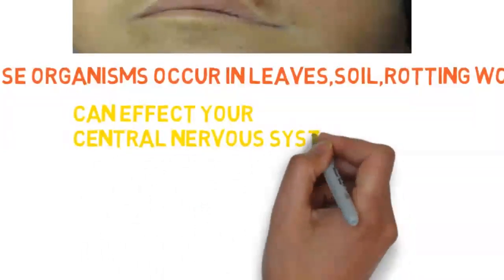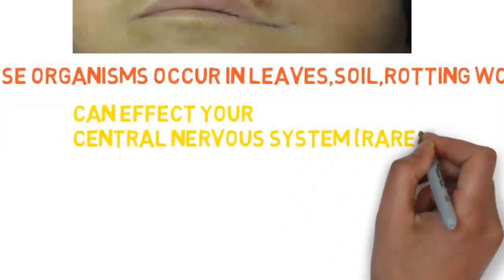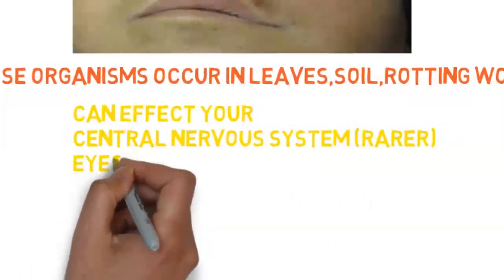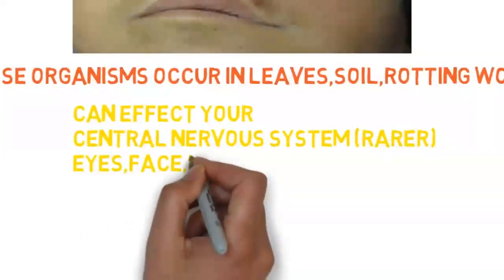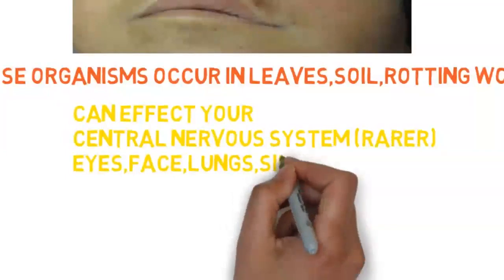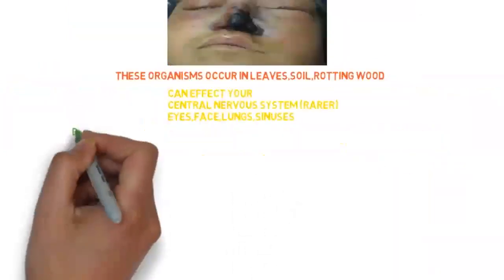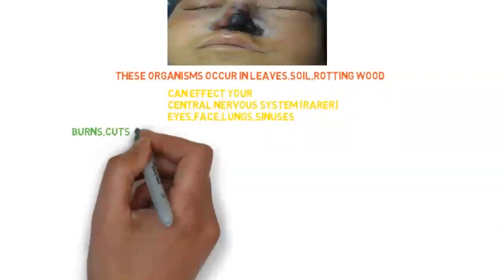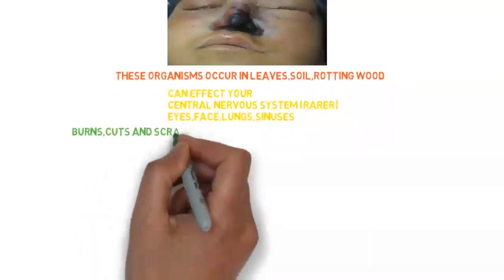The infection can affect the central nervous system, eyes, face, lungs, and sinuses. The fungus can also infect your skin via a cut or burn — in such cases, the wound or burn ends up becoming the area of infection.